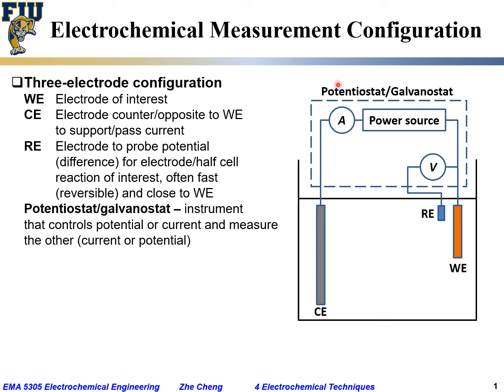It is a complex instrument that controls potential or current and measures the other. For a potentiostat — 'stat' means constant — you control constant potential and measure current. For a galvanostat — 'galvano' is for current — you maintain constant current and measure the change in potential. Quite often it is a single instrument that can control either constant potential or constant current.